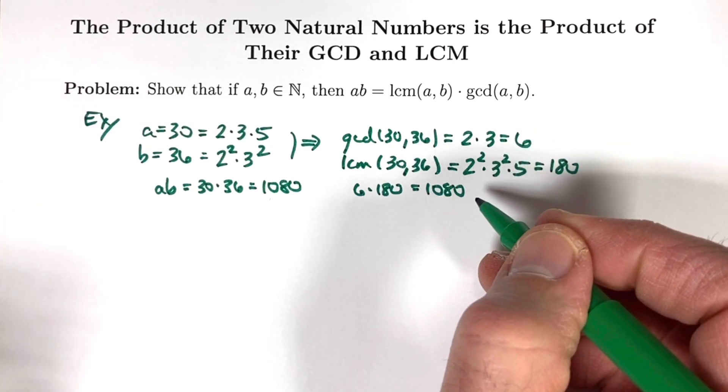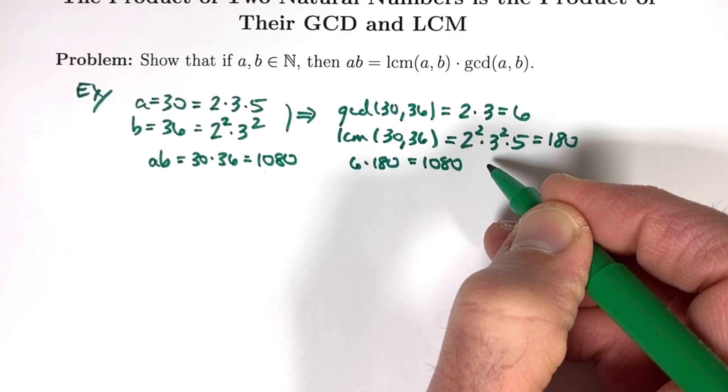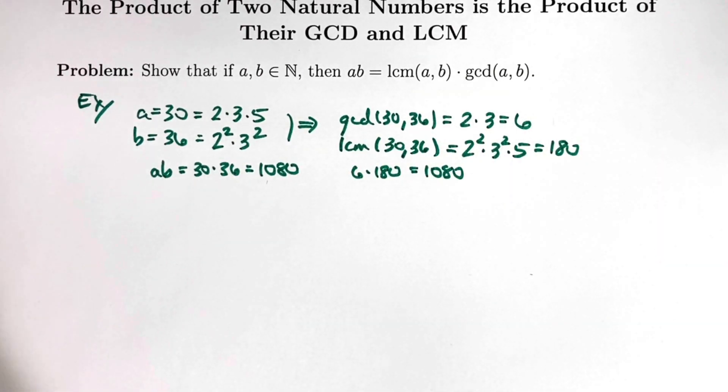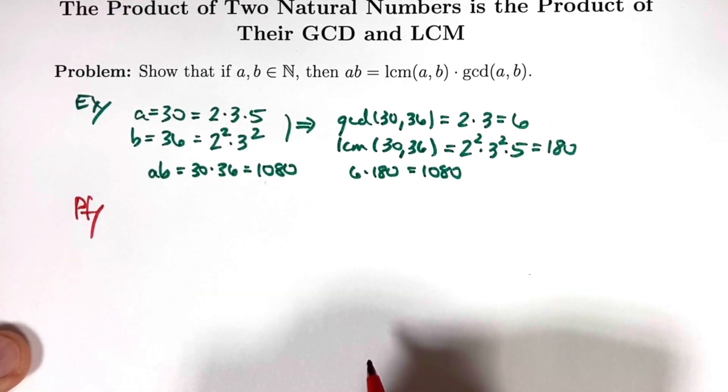...though it does hint at a possible proof. You can prove this fact using the fundamental theorem of arithmetic, in other words, unique prime factorization. All right, let's now move on to the elegant proof of this fact that does not use the fundamental theorem of arithmetic, but instead uses the fact that the GCD is a linear combination.